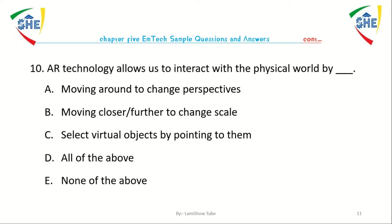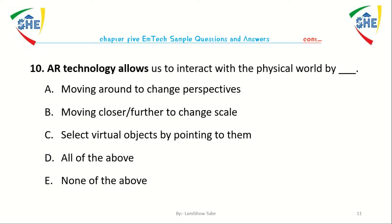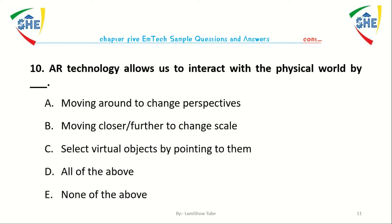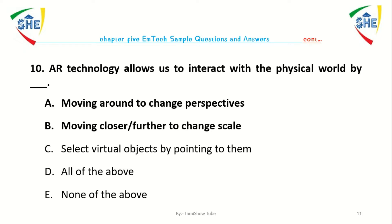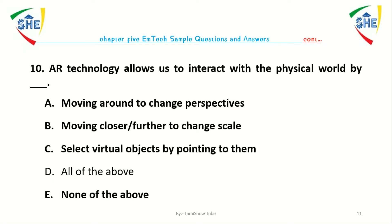Question number 10: Augmented reality technology allows us to interact with the physical world by dash. A) Moving around to change perspective, B) Moving closer or further to change the scale, C) Selecting virtual objects by pointing to them, D) All of the above, E) None of the above.